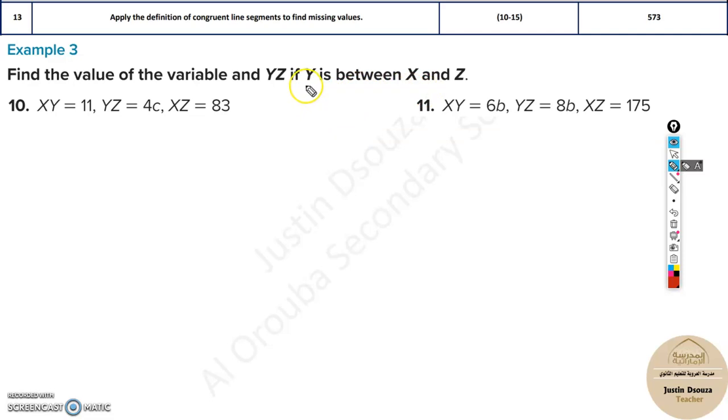Here they are told Y is in between X and Z. So imagine this is a line segment, X and Z, then Y is somewhere in between. We don't know where exactly. We need to solve that. This is X and this is Z.